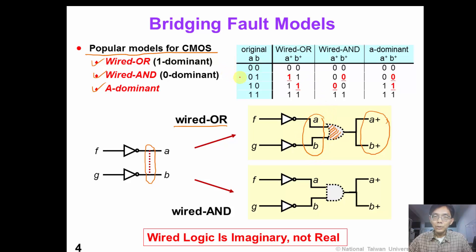For example, suppose that the original A and B are 0 and 1. After the wire-OR fault model, signal A would be changed to 1. Similarly, if the original input is 1 and 0, B would be changed to 1. So this is why the wire-OR model is also called a 1-dominant fault model.